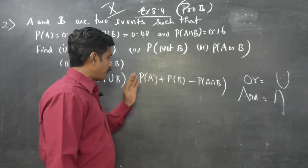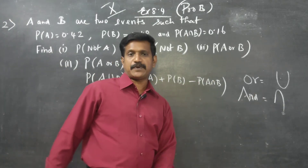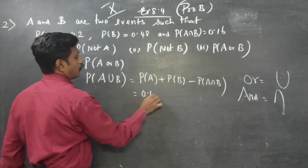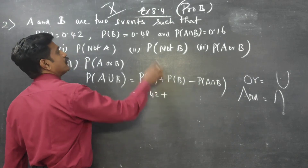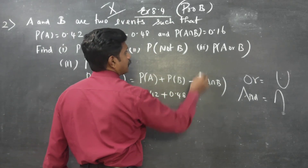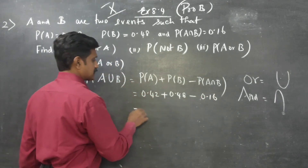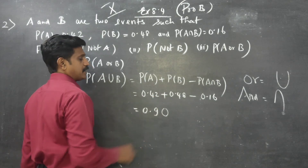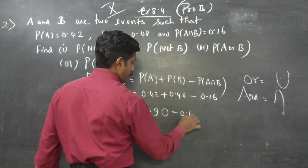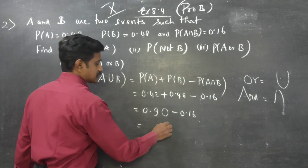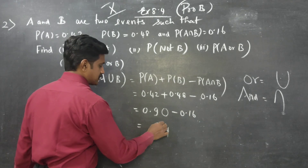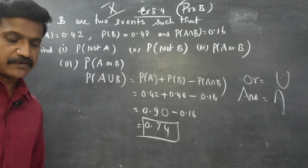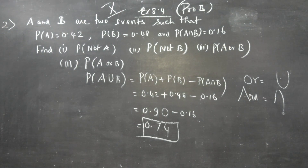The formula for P(A union B) is P(A) plus P(B) minus P(A intersection B). So substituting: P(A) is 0.42, plus P(B) is 0.48, minus P(A intersection B) is 0.16. Adding 0.42 and 0.48 gives 0.90, minus 0.16 gives 0.74. Your answer will be 0.74. This is the second sum. We'll see you next time.